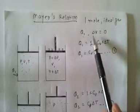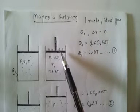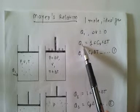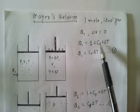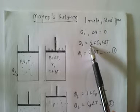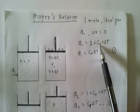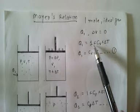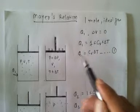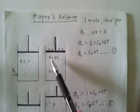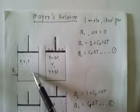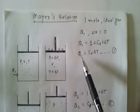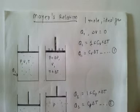The amount of heat given is Q1. Since delta V is zero — we have not allowed volume to change — Q1 is entirely used to change the internal energy of the gas. So Q1 equals 1 times CV times delta T, where CV is the molar specific heat at constant volume and delta T is the rise in temperature. Therefore Q1 equals CV delta T. The entire heat increases internal energy since no work is done.